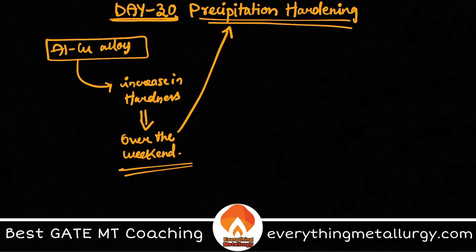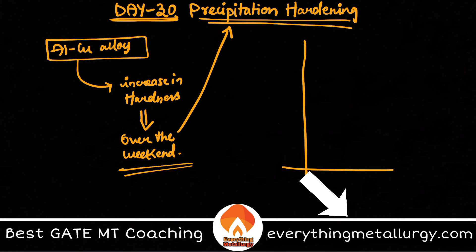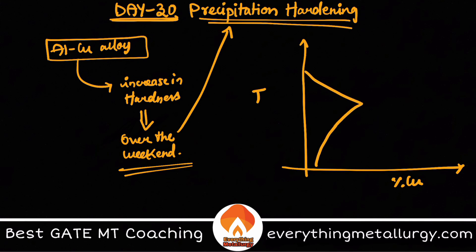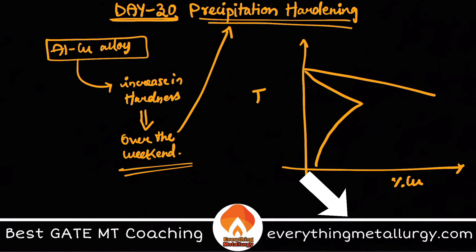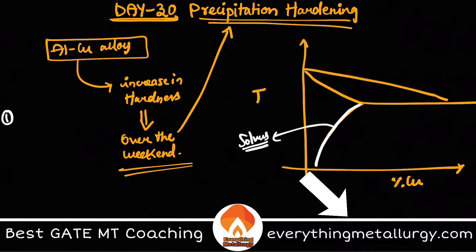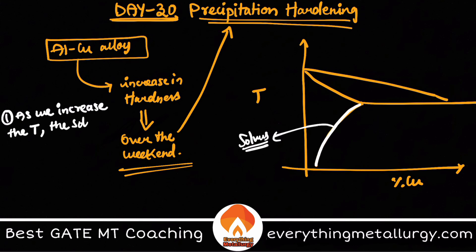Let's take the same aluminum-copper system. Looking at the phase diagram, one important rule to remember for precipitation hardening is the solvus line. The solvus plays an important role: as we increase the temperature, the solubility also increases — that is what is predicted by the solvus line.